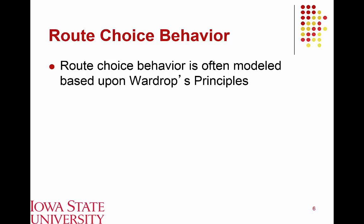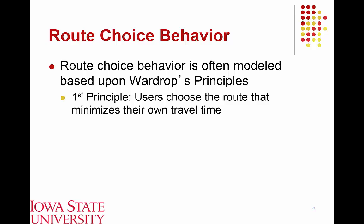The initial research on modeling traffic assignment and route choice behavior was by a researcher named Wardrop. His first principle states that users will select a route such that they minimize their own travel time — the only thing they care about is which available route gets them from point A to point B in the shortest time possible. If all travelers utilize this same principle, we arrive at a situation referred to as user equilibrium.